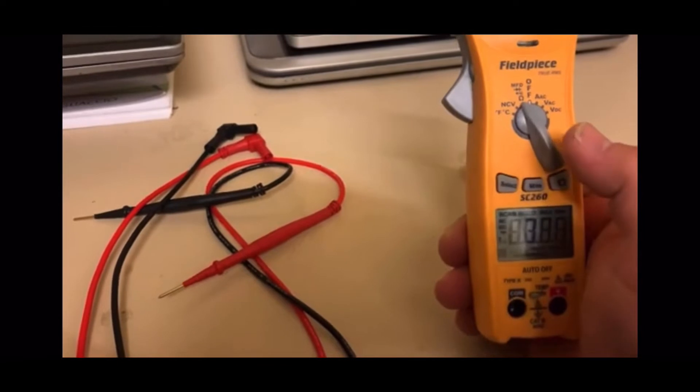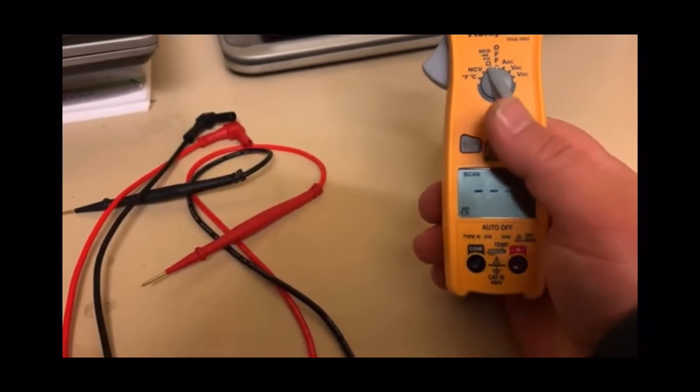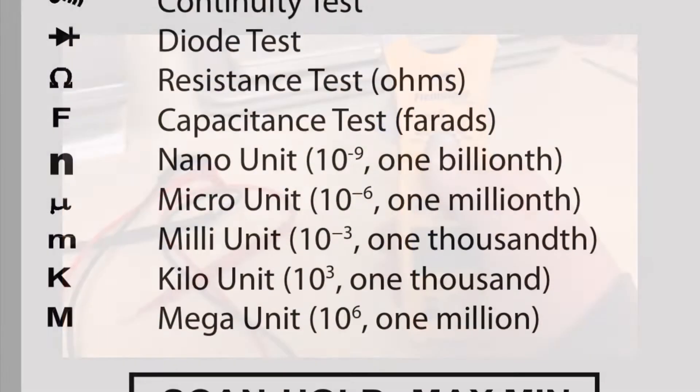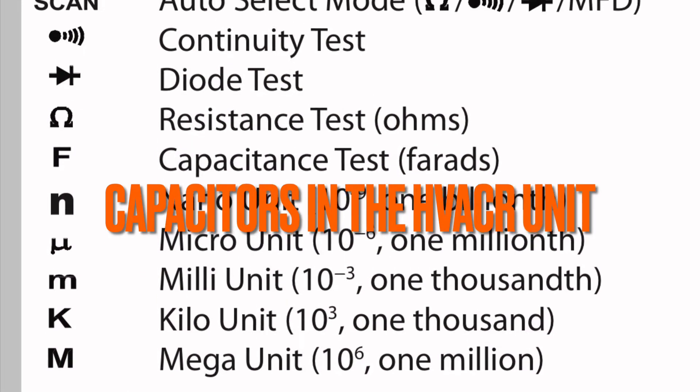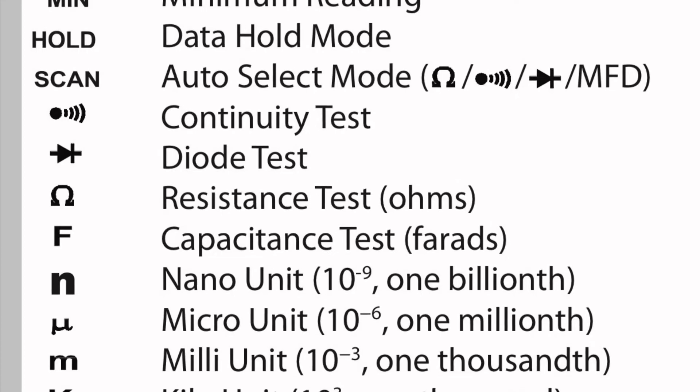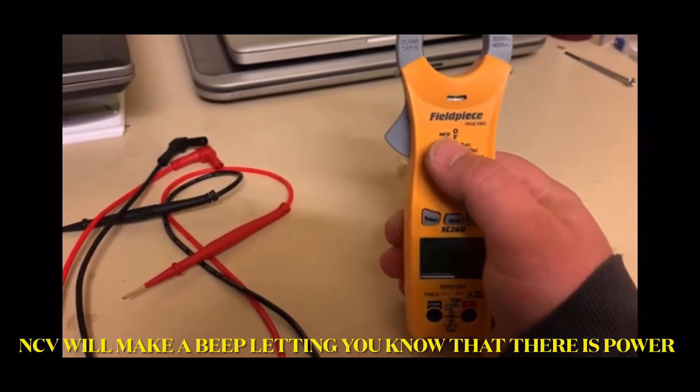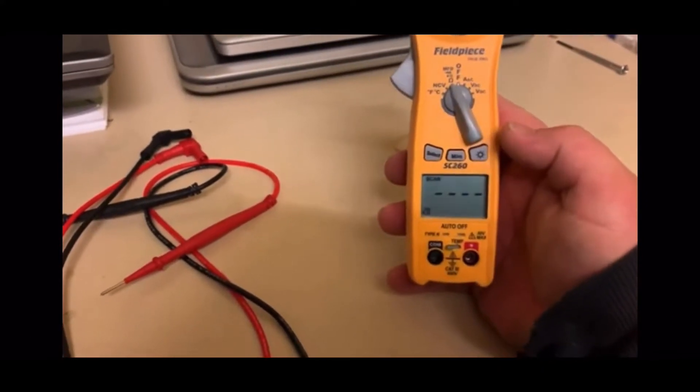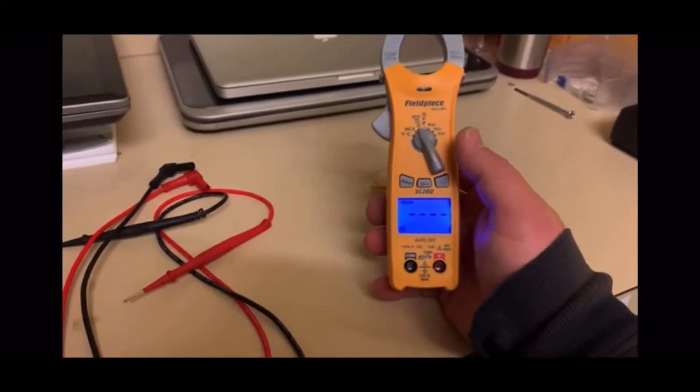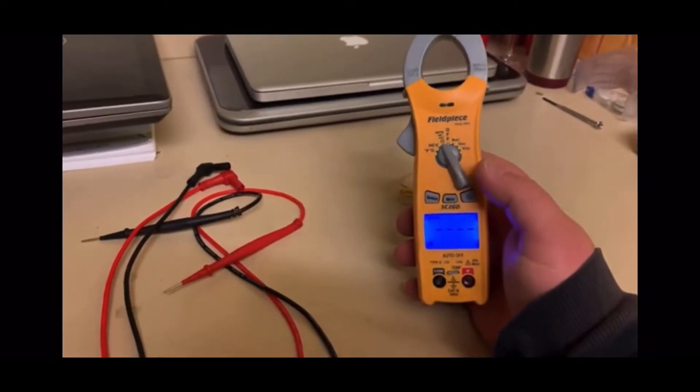I want to talk about this section which has three different testing options: you can test ohms, diodes, continuity, and also microfarads for the capacitors. You can pause the video and check the meaning of every single signal and use select to change between each of them. We're going to hit the light button if you're working in a dark area with low light.